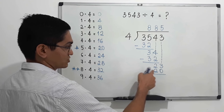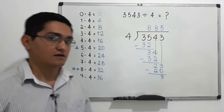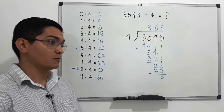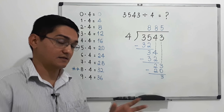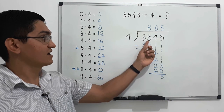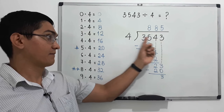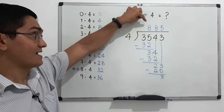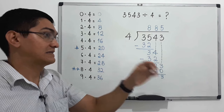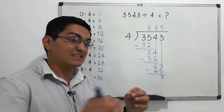Since five times four equals 20, we write 20 below 23 and subtract. 23 minus 20 equals 3. If we want to know the remainder and the quotient, we can say that 3543 divided by four equals 885 with a remainder of three.